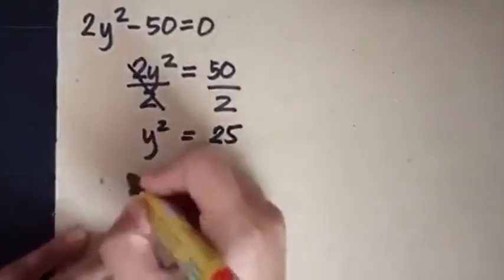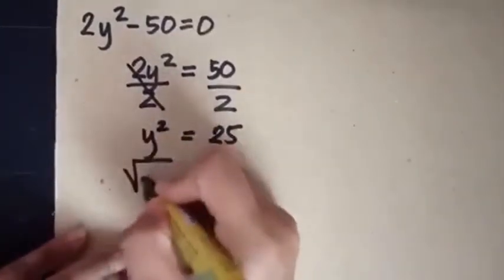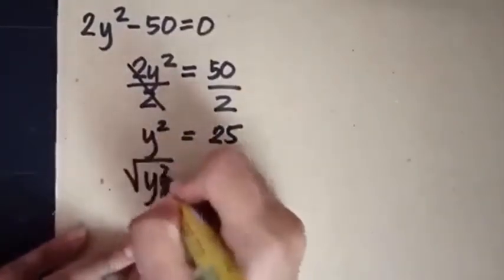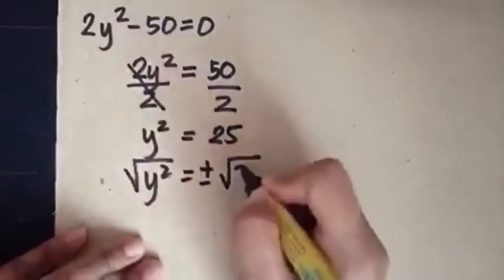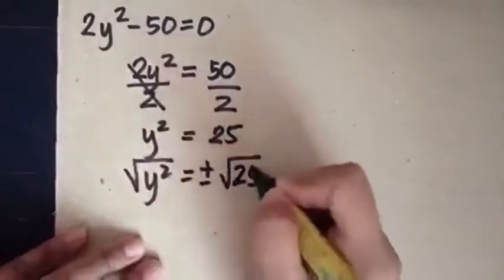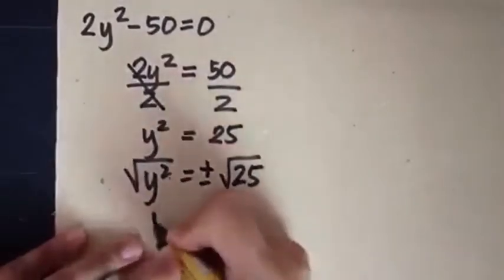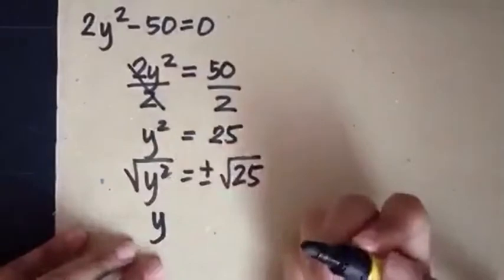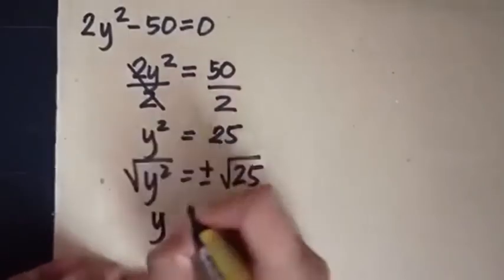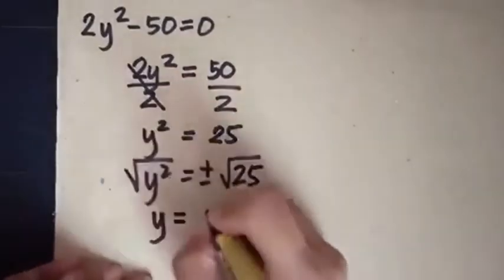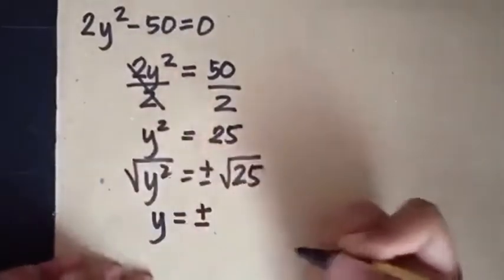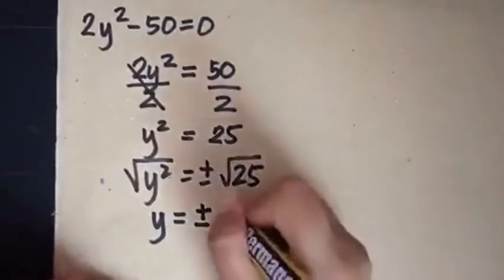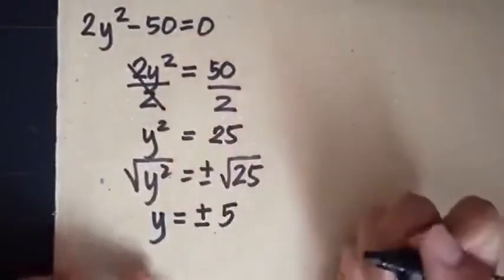Next, we get the square root of both sides. The square root of y squared is y, which equals plus and minus the square root of 25, which is 5.